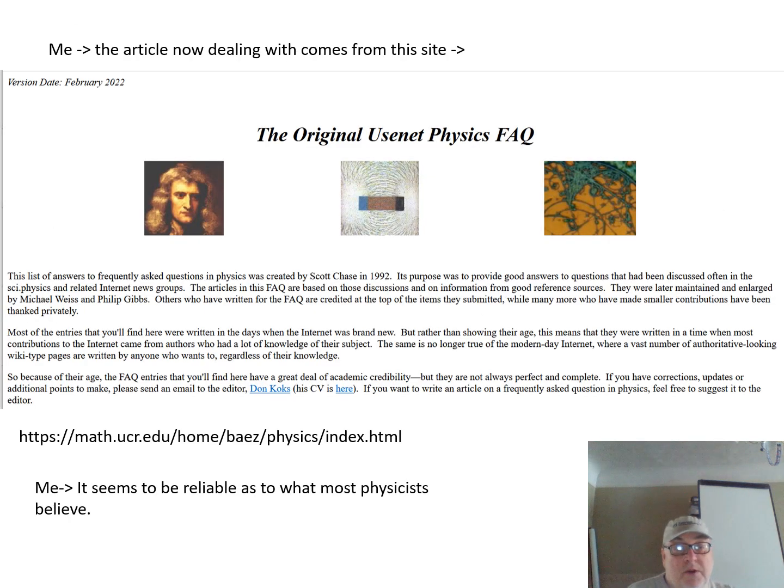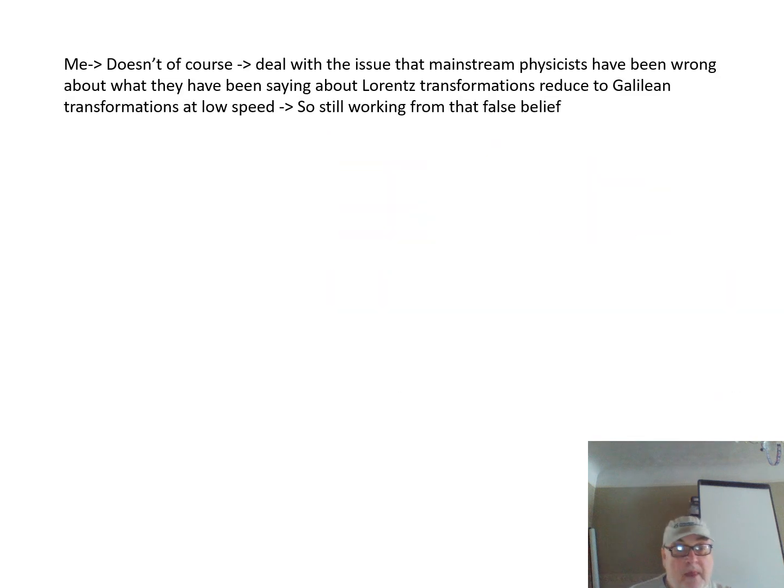The article comes from this website, Physics FAQ. It seems to be reliable as to what physicists believe. It doesn't, of course, deal with the issue that mainstream physicists have been wrong about what they've been saying about Lorentz transformations reducing to Galilean transformations at low speed. So still, it's working from that false belief.